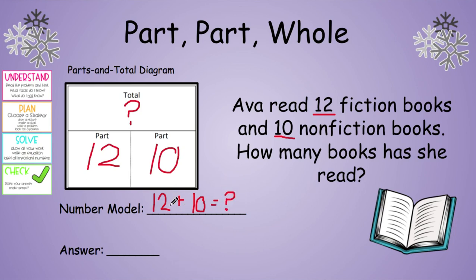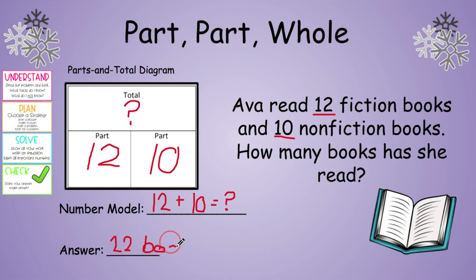So now it's your job: 12 plus 10. In the ones place, 0 and 2 is 2, and in the tens place, 1 plus 1 is 2. So she has read a total of 22 books. Now if you can't do that in your head — which is perfectly fine, although we should all be able to add 10 — then you could do stack and add.